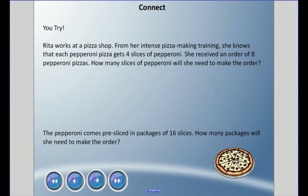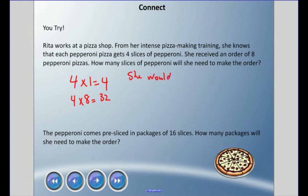Four slices of pepperoni is one pizza, so four times one pizza is four slices. We need eight pizzas, so four times eight is 32. She would need 32 slices of pepperoni to make those eight pizzas.